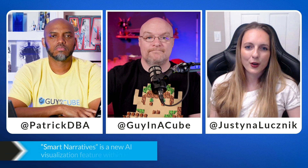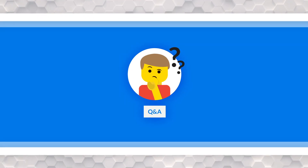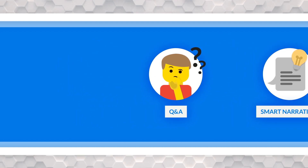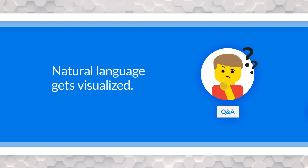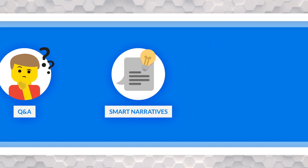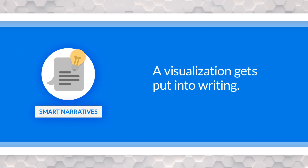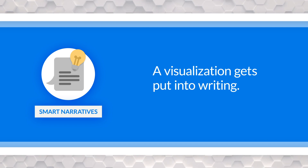Thank you so much for having me on the show. Smart narratives is a new AI visualization that we've been working on for a while, and we're really excited to get it out in preview in the September release. If you've used Q&A before in Power BI, smart narratives is basically the opposite. With Q&A, you start with natural language and then you get a visualization back. With smart narratives, you start with all your different visuals on the page and then you get an auto-generated summary of what's going on. It's all about improving data storytelling and data literacy in Power BI.